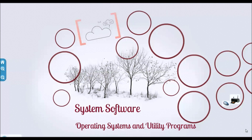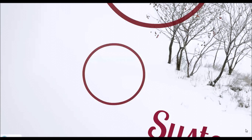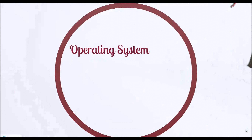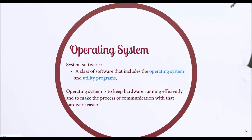The topic we are going to talk about today is System Software, Operating Systems and Utility Programs. System Software is a class of software that includes the Operating Systems and Utility Programs, which handle these details and hundreds of other tasks behind the scenes. The purpose of an Operating System is to keep hardware running efficiently and to make the process of communication with the hardware easier.